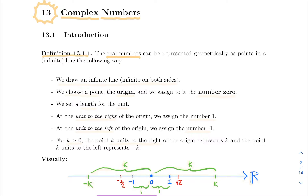Here below I have my real line — an infinite line with both sides going to plus or minus infinity. The standard direction is to the right. On that line, we choose a point that we call the origin, and to that point we assign the number zero. Then we choose a length for the unit, and if you move one unit to the right, this corresponds to the number one — my unit length shown here in green.